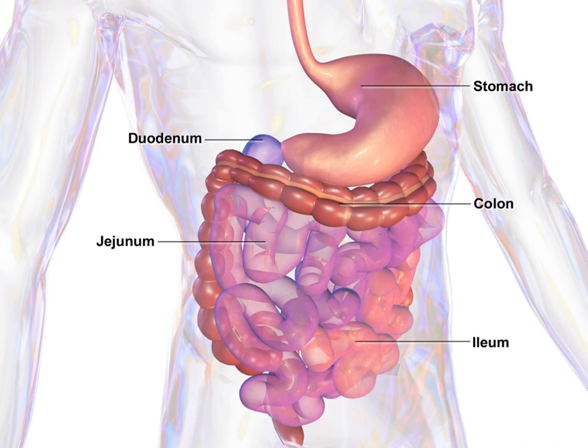Intraperitoneal parts of the GI tract are covered with serosa. These include most of the stomach, first part of the duodenum, all of the small intestine, cecum and appendix, transverse colon, sigmoid colon, and rectum. In these sections of the gut there is a clear boundary between the gut and the surrounding tissue, and these parts of the tract have a mesentery. Retroperitoneal parts are covered with adventitia; they blend into the surrounding tissue and are fixed in position. These include the esophagus, pylorus of the stomach, distal duodenum, ascending colon, descending colon, and anal canal. In addition, the oral cavity has adventitia.